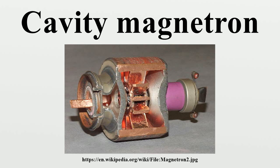Unlike other microwave tubes, such as the klystron and traveling wave tube, the magnetron cannot function as an amplifier, increasing the power of an applied microwave signal. It serves solely as an oscillator, generating a microwave signal from direct current power supplied to the tube.